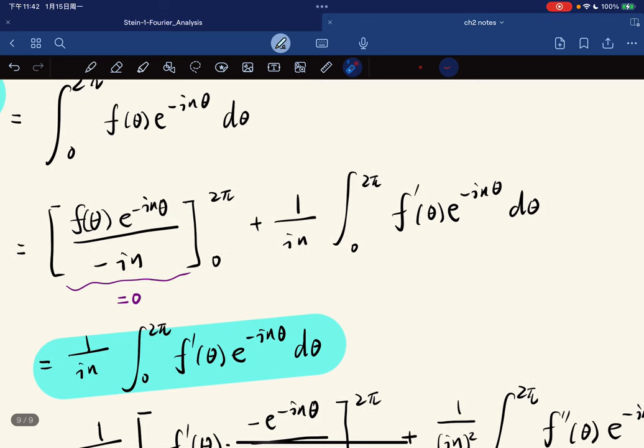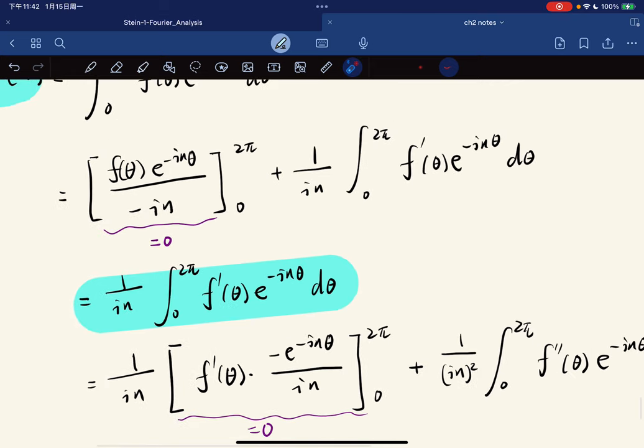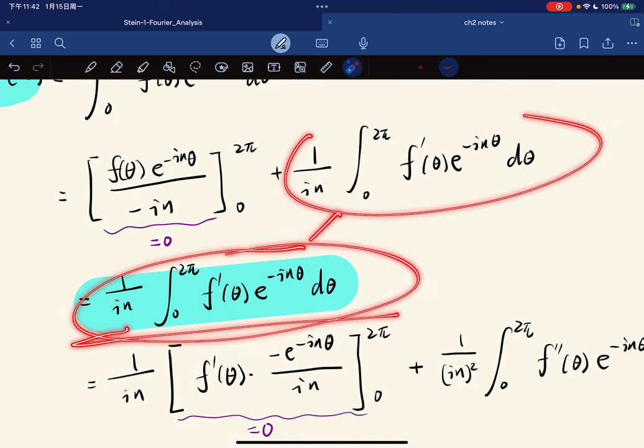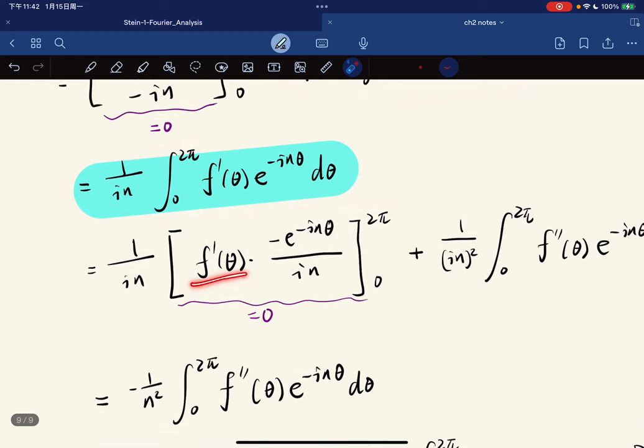After this one, we just do integration by parts again because f is twice differentiable. So the double derivative is continuous, hence integrable. So this becomes, you just drop it down here and do integration by parts again. And because f is periodic, then f prime is also periodic. Right? You're basically just a copy of yourself. So just do some calculation.